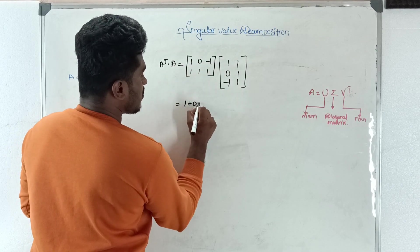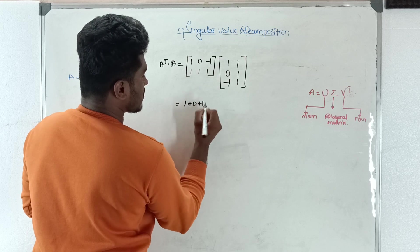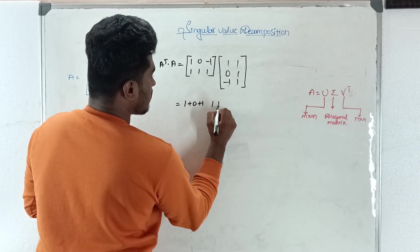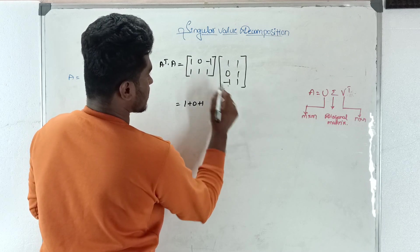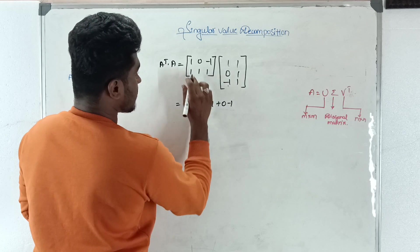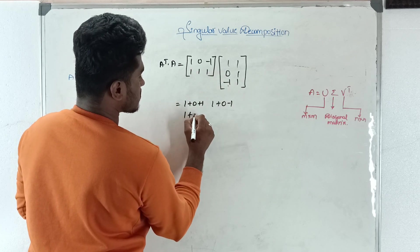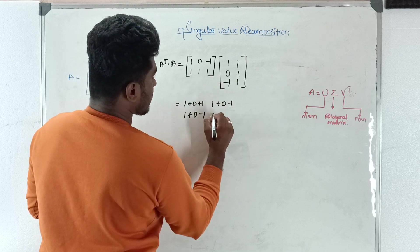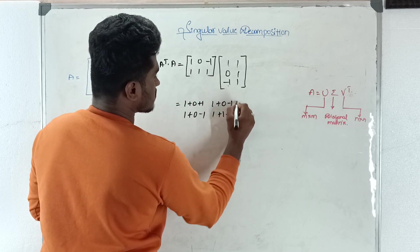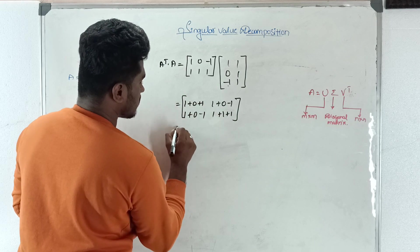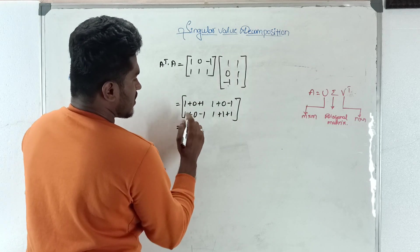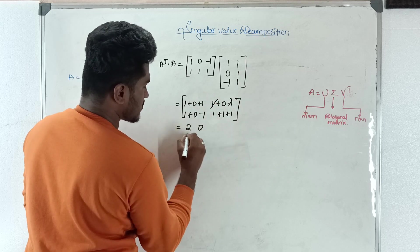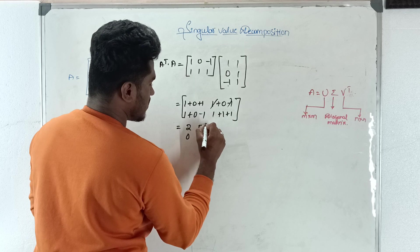Computing A transpose times A: the entries work out as 1·1 + 0 + (-1)·(-1) + 1, then 1 + 0 - 1, then 1 + 0 - 1, and 1 + 1 + 1 + 1, giving values of 2, 0, 0, and 3.